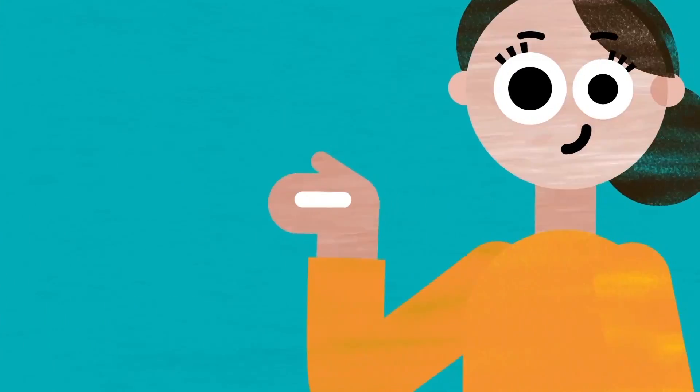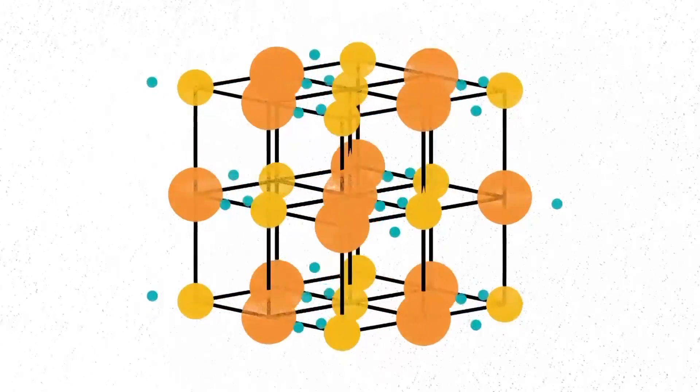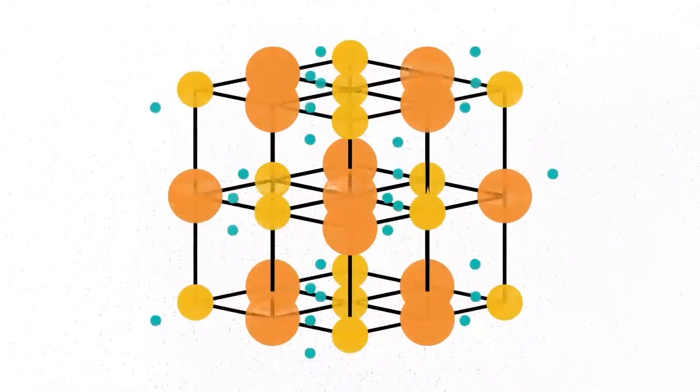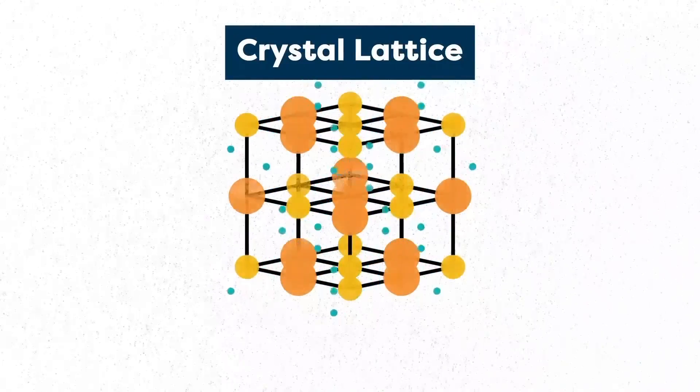To understand this, we first have to understand this salt crystal. If we zoom into the atomic level, we see a very neat and periodic arrangement of atoms with electrons orbiting around them. This structure is called a crystal lattice because it's common to all crystals.